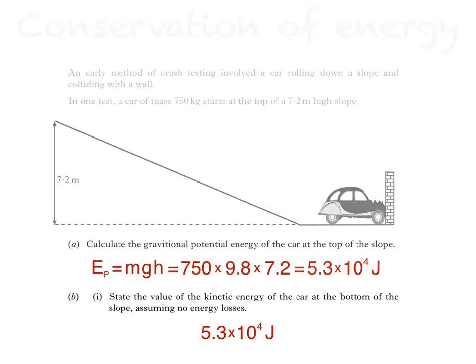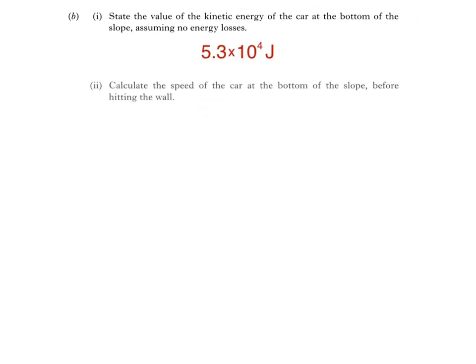Here's the last part of the question. B part 2 asks us to calculate the speed of the car at the bottom of the slope before hitting the wall. So, now that we know the kinetic energy of the car at the bottom of the slope, we just substitute it into this equation. Ek is kinetic energy in joules, m is mass in kilograms, and v is speed in meters per second. That's what we're trying to find out.